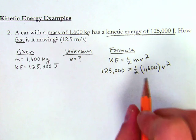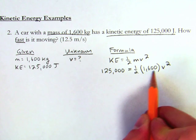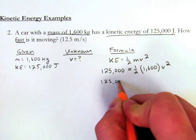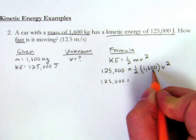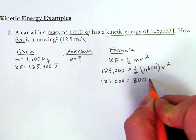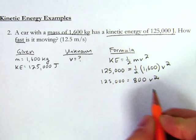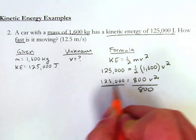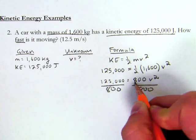Now, to solve this equation, I know I have to simplify this side first, so I leave it 125,000 equals 1/2 of 1,600 is going to be 800 times v squared. And then it's just a simple equation, divide by 800, divide by 800, and I'm going to be left just over here with my v squared.